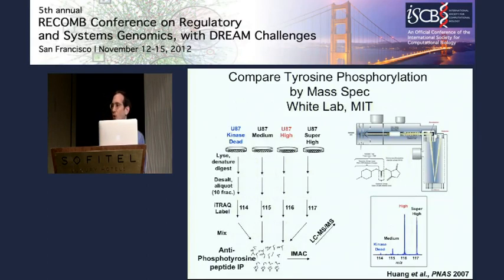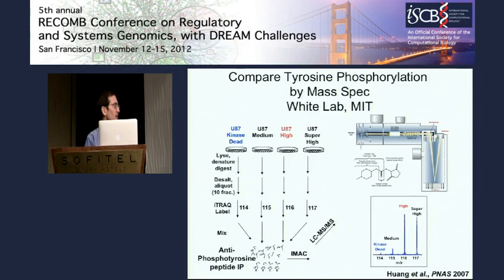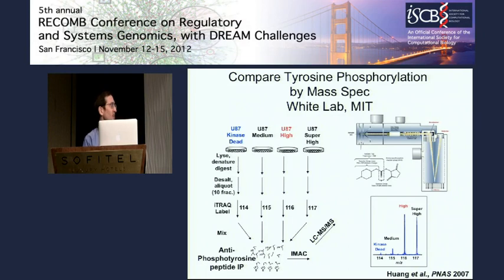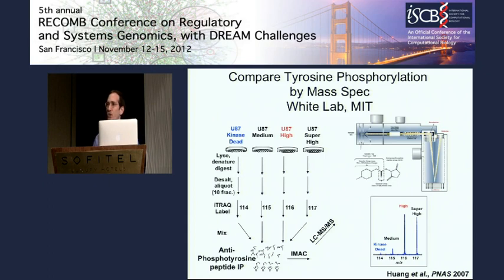We started by analyzing phosphoproteomic data collected by our collaborator at MIT, Forrest White, who used a mass spec-based technology to detect peptides that had tyrosine phosphorylation in cells derived from glioblastoma tumors — either expressing high levels of the vIII mutation or expressing an EGFR protein with an inactive kinase incapable of phosphorylating anything. By looking at differences between cells with high levels of the vIII mutation and the inactive kinase, you can hopefully discover what the underlying signaling pathway is. We then added gene expression data to those phosphoproteomic data, and we need to figure out how to incorporate those two together. Remember, we want to use gene expression data as evidence of upstream signaling pathways, so we need to identify the key transcription factors changing their activity in the vIII-containing cells versus wild-type.